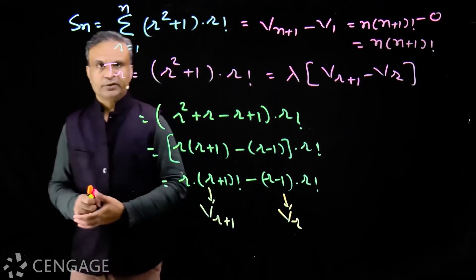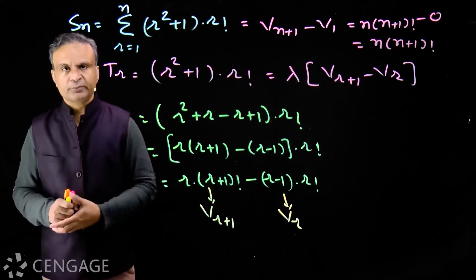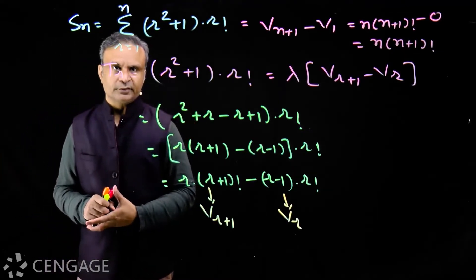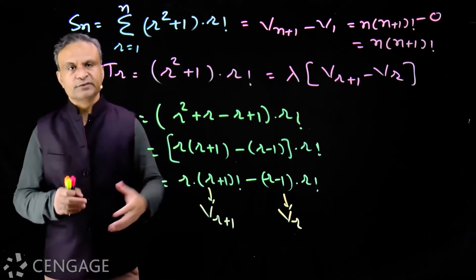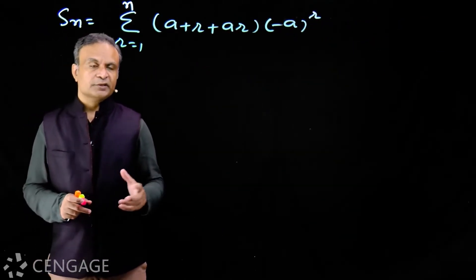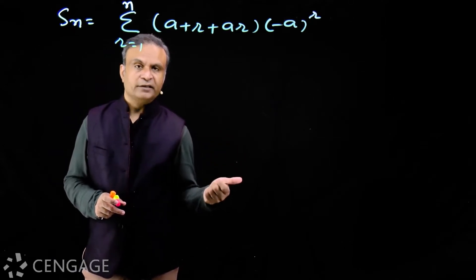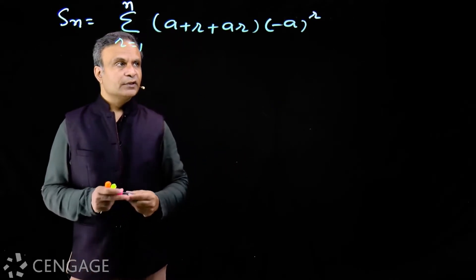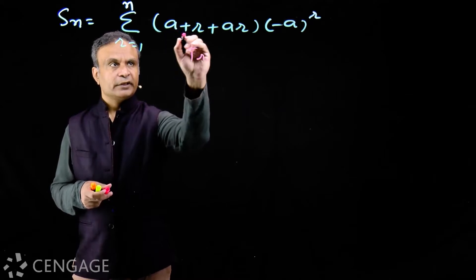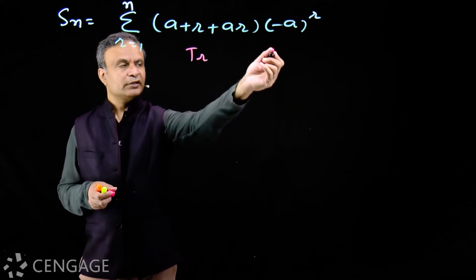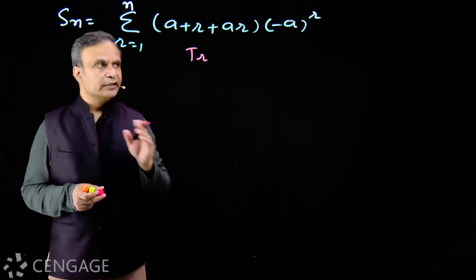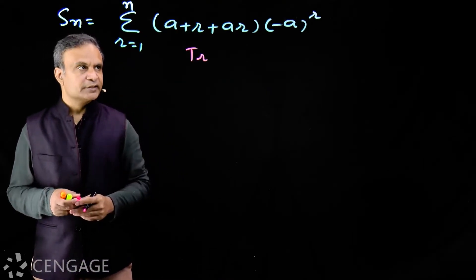Here we have to show some algebra skills. Now let's work on a series in which terms occur alternatively with plus and minus signs. Let's write the term Tr as (a + r + r) multiplied by (−a)^r, where terms will occur alternatively with plus and minus signs.